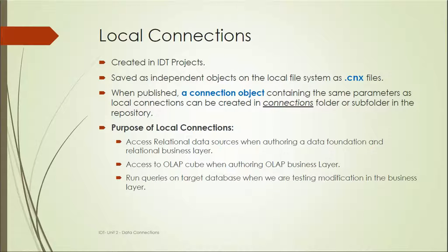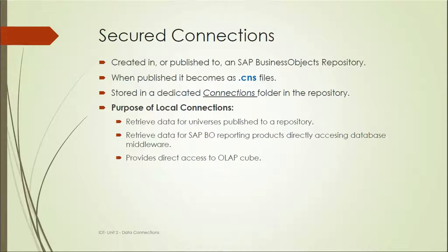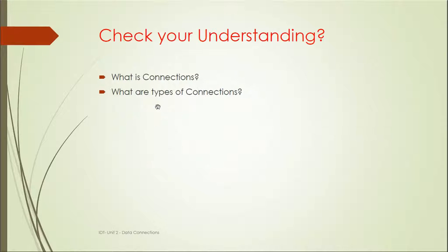You can also run queries on the target database when testing modifications in the business layer. Coming to the second type, secured connections: these are created and published to the SAP Business Objects repository, where they become .cns files. They are stored in a dedicated connections folder in the repository. The purpose of secured connections is to retrieve data for universes published to the repository, retrieve data for SAP BO reporting products directly accessing the database, and provide direct access to OLAP cubes.